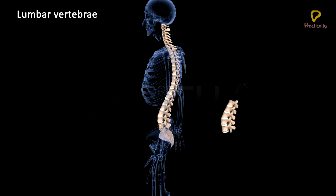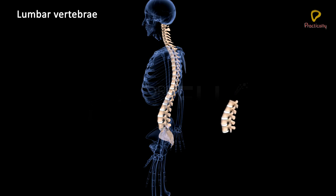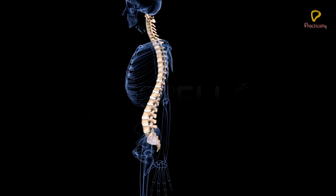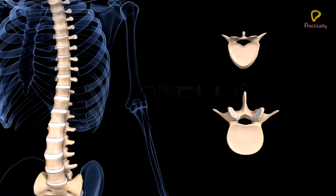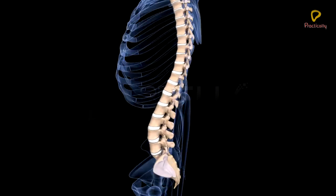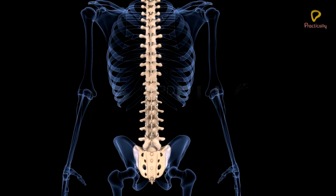Lumbar vertebrae: There are five lumbar vertebrae in the abdominal region. These are the largest, thickest, and strongest vertebrae, as they bear part of the weight of the trunk. They also provide surface for attachment of the large muscles of the back.